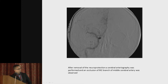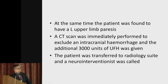We then performed intracranial arteriography and found occlusion of the M2 branch of the middle cerebral artery. Simultaneously, the patient was examined and found to have left upper limb paresis.